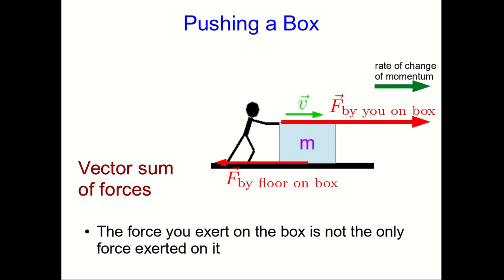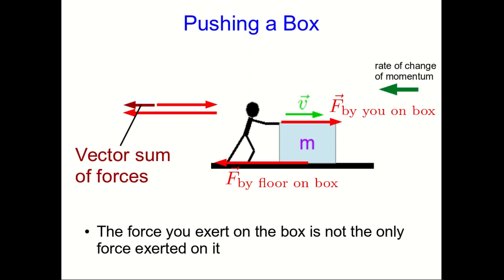Now the vector sum looks like this, with the big forward pointing vector by you, the smaller backward pointing vector due to the floor pointing back, and the vector sum here pointing forward. Or, of course, you could push less hard. Now the box will slow down, and the vector sum of forces points back.